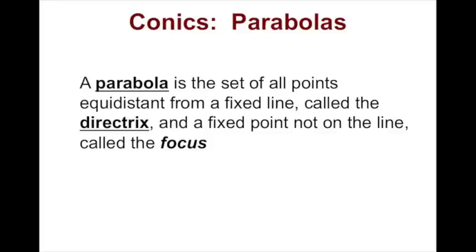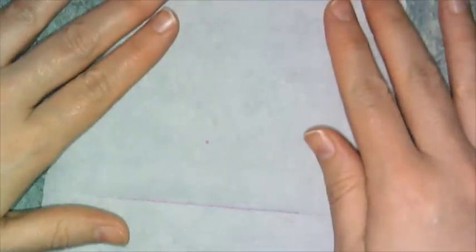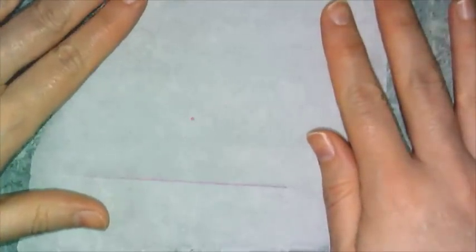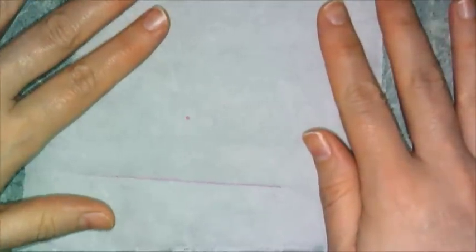The second way I'm going to show you is much more low-tech. It actually involves a piece of wax or parchment paper and some folding. So now for the super low-tech way of creating a parabola, you need a piece of wax paper, something called patty paper.